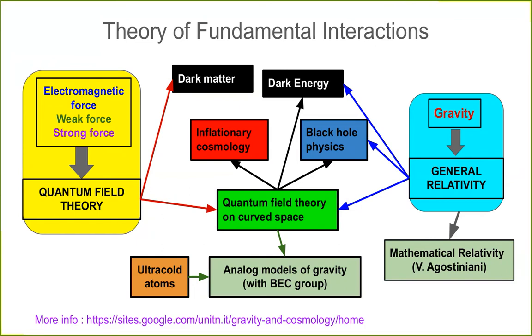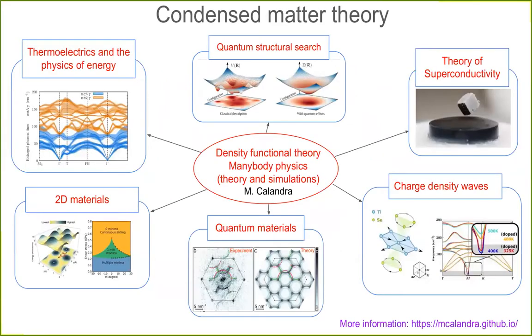A large part of the work of Virginia Agostiniani is also devoted to the study of geometrical properties of elliptic partial differential equations, in the framework of classical potential theory and general relativity. After that, we present the researches in the condensed matter theory group.